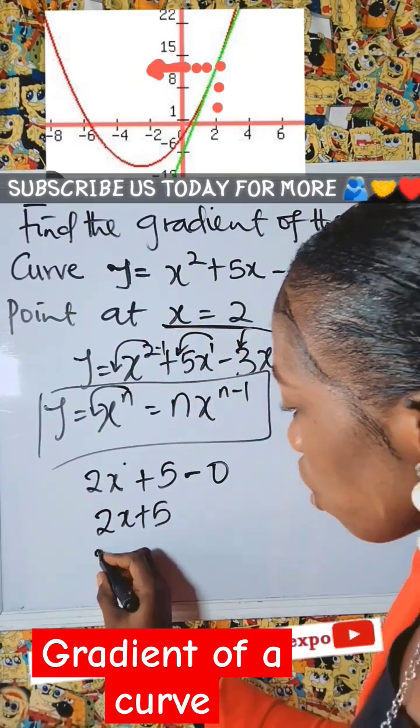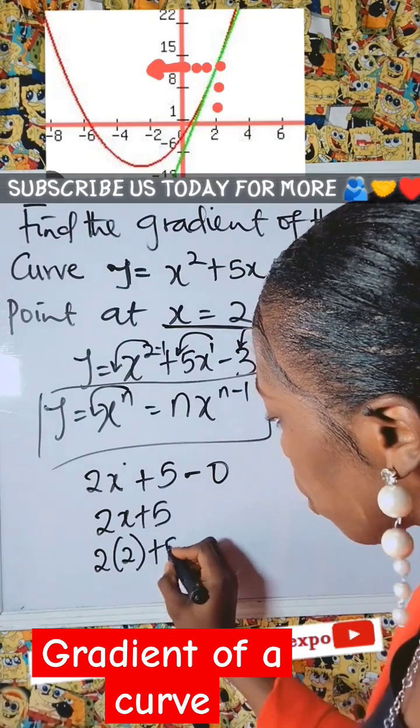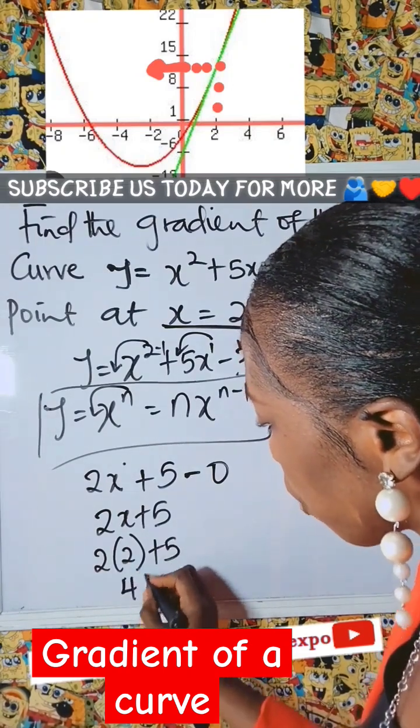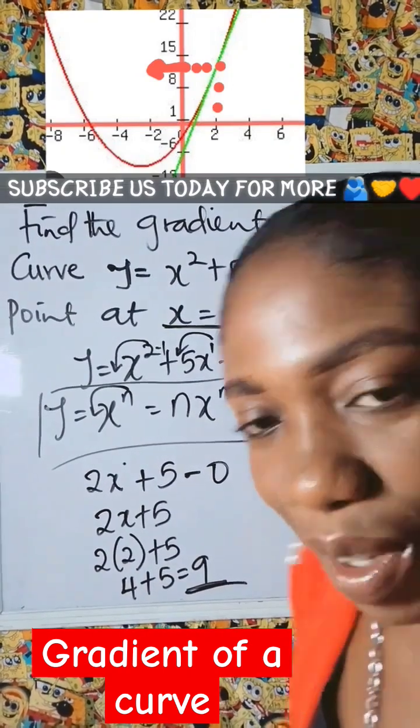Remember at x equal to 2. So we have 2 into 2 plus 5. This will multiply to give us 4 plus 5 as 9.